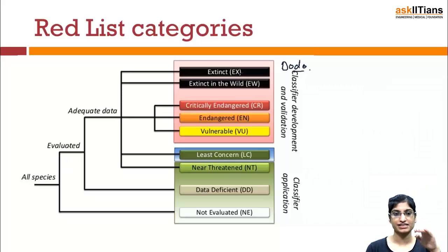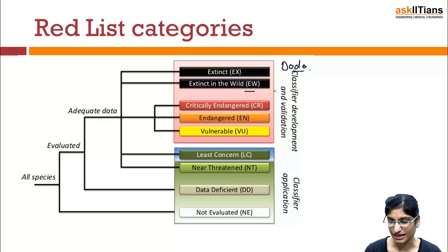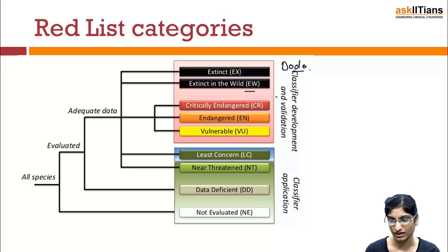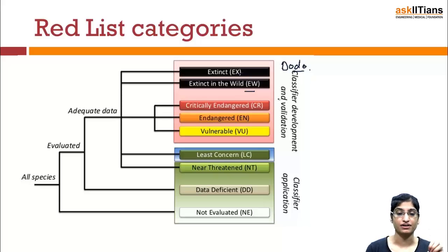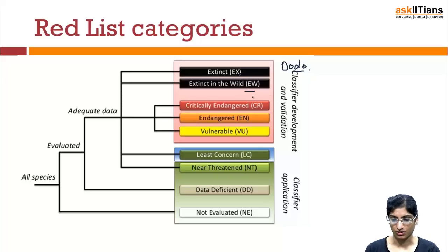As you can see, all species are evaluated for adequate data. Then there is Extinct in the Wild (EW). A taxon is Extinct in the Wild when exhaustive surveys of known or expected habitats have failed to record any individual. The habitat may be identified, but we don't have any information on whether they existed or not.